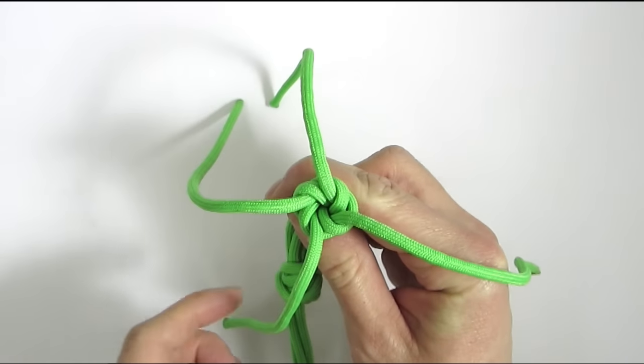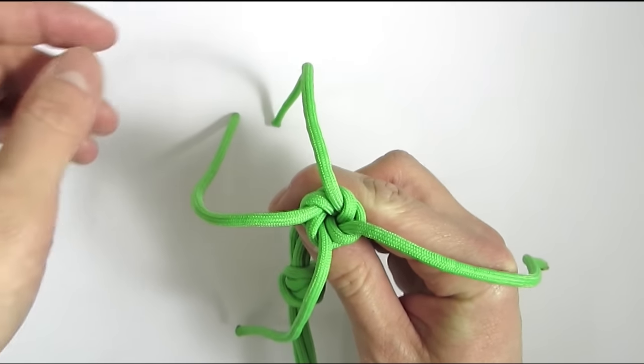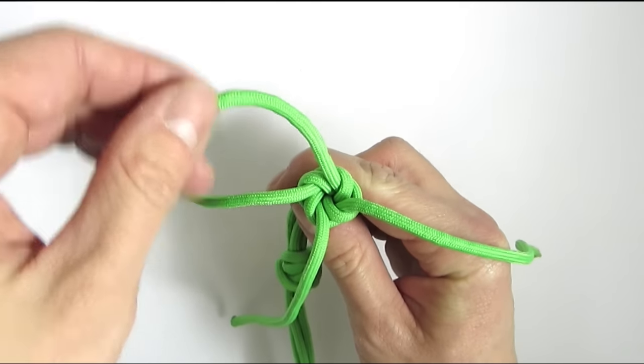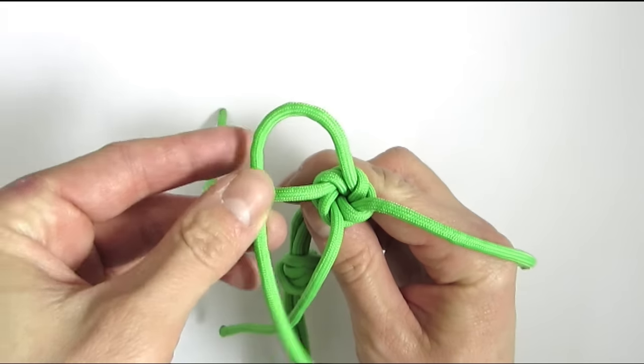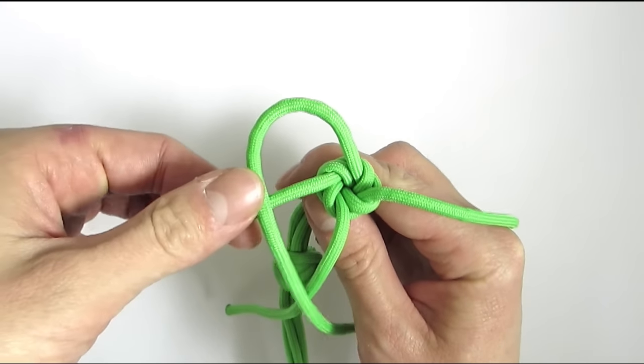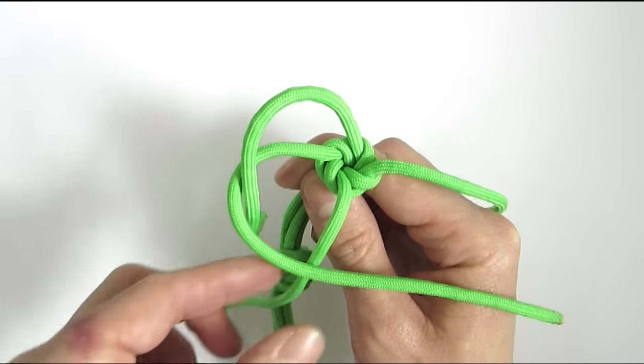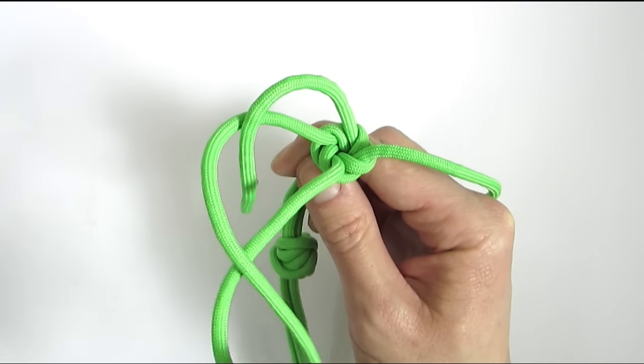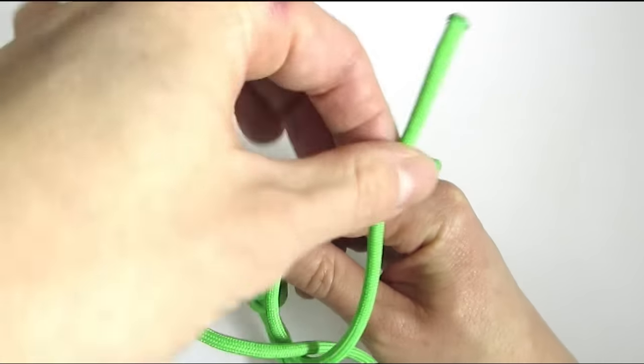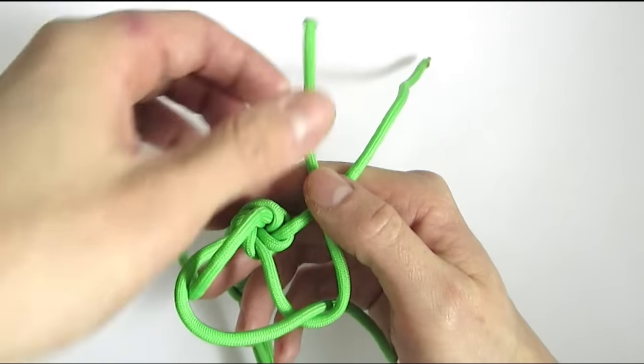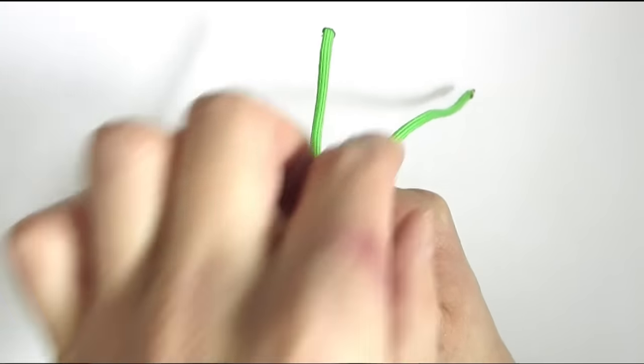We're now going to tie a crown knot on top by taking one of the cords and passing it counterclockwise over the next cord, and then the next cord goes counterclockwise over the next, then the next one over the next, and then the last one finishes inside the first loop that we made.